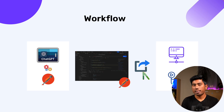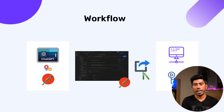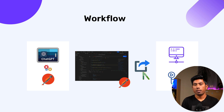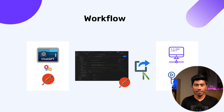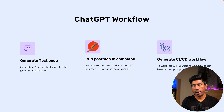Basically, you need to pass the API specification to ChatGPT to write the test script for Postman, and once it is given, it is going to generate the test code for you. All you have to do is copy that particular test generated by ChatGPT, paste it into your collections in Postman, export the collection, and if you have environment variables, export that as well. Then run them in the CI/CD pipeline where the application is actually deployed. In a nutshell, you need to ask three questions to ChatGPT.